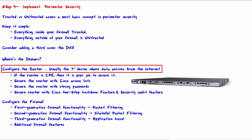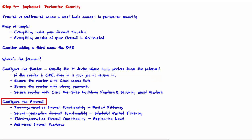Lastly, we will configure the firewall. Traffic that is permitted to pass the router next hits the firewall. A firewall is a much more granular and powerful device for controlling traffic in and out than your router. First-generation firewall functionality is packet filtering, which is pretty much the same as the functionality you get with Cisco standard and extended access lists. Packet filtering occurs at layers 1, 2, and 3 of the OSI reference model.